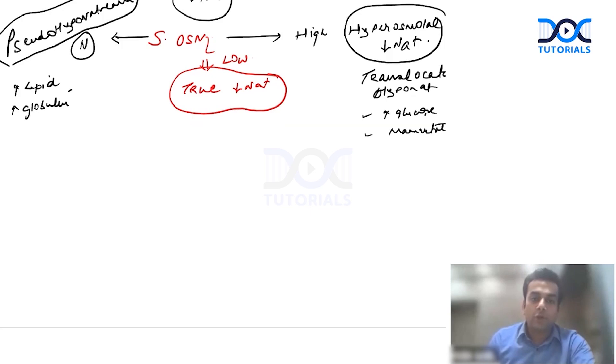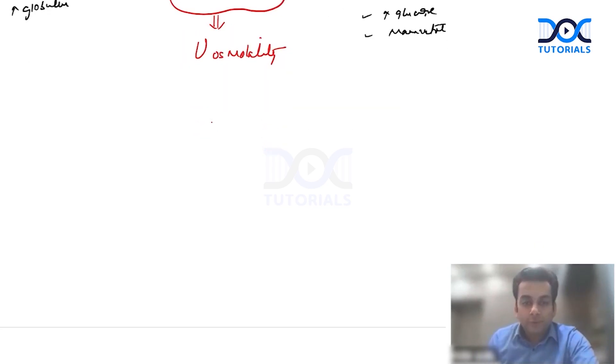Once you get a patient of true hyponatremia, that is serum osmolality is low, your next job is to do a urine osmolality. Why, sir? If the urine osmolality is less than 100 or if it is more than 100. If it is more than 100, I can surely say that ADH is acting, ADH is present in the serum. So if the urine osmolality is less than 100, it means ADH is absent.